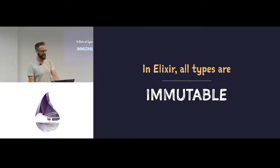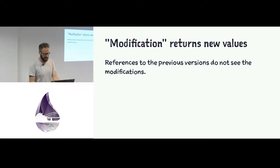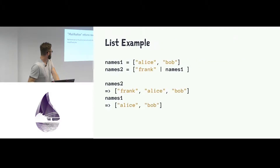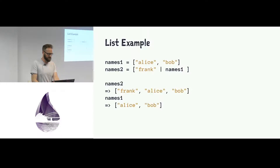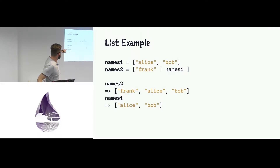You have APIs that, if you squint hard enough, look like you are changing something, but really they just return a new thing under the hood. Modifications to things actually return new values and don't change the underlying thing. If you have a list of names, you're creating a new list that prepends a new name to the front of an existing list, but the original list is unchanged.